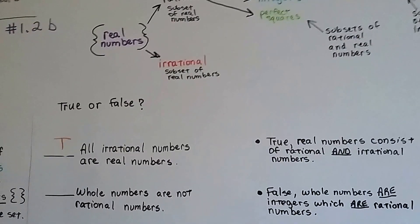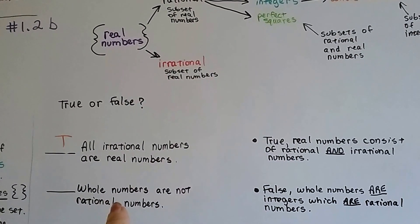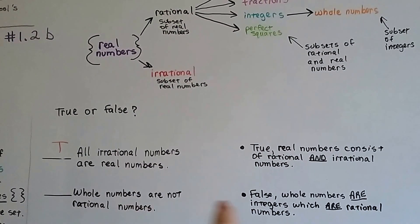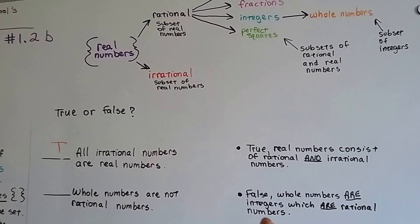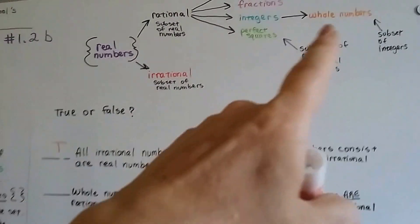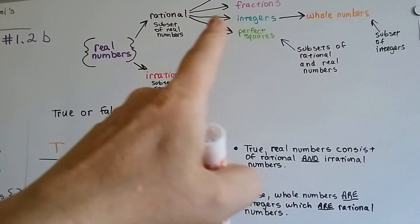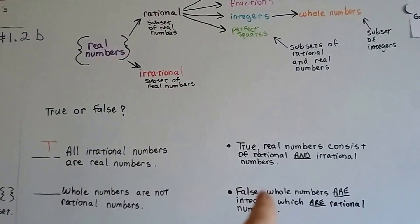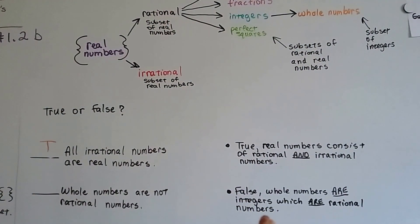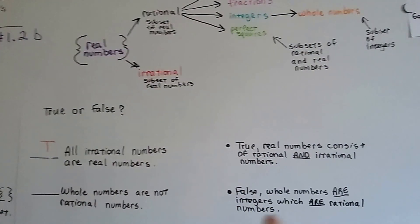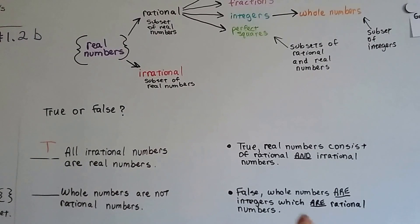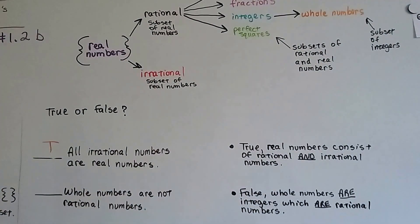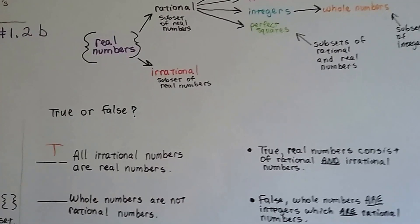Whole numbers are not rational numbers — that's false. Whole numbers are rational; they're part of the subset. They're integers, and integers are rational numbers. So that one is false.